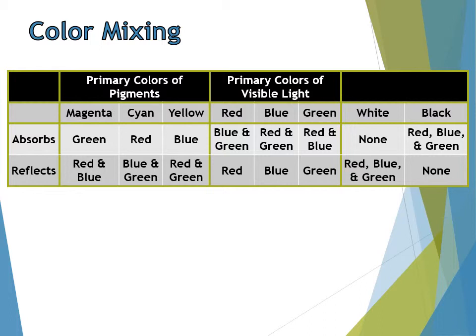This diagram shows what happens with pigments. The three primary colors of pigments are magenta, cyan, and yellow, while the three primary colors of visible light are red, blue, and green. A magenta pigment absorbs green light and reflects red and blue. A red pigment absorbs blue and green and reflects red. Something that reflects everything and absorbs nothing reflects all three colors and appears white. Something that absorbs all three colors and reflects nothing appears black.